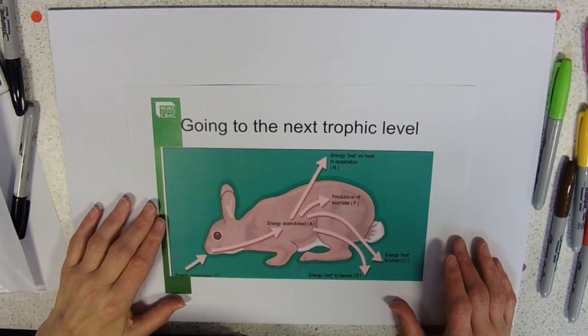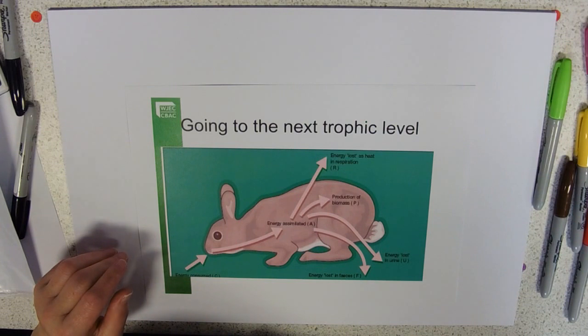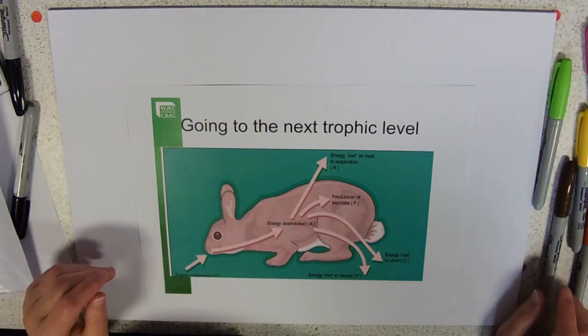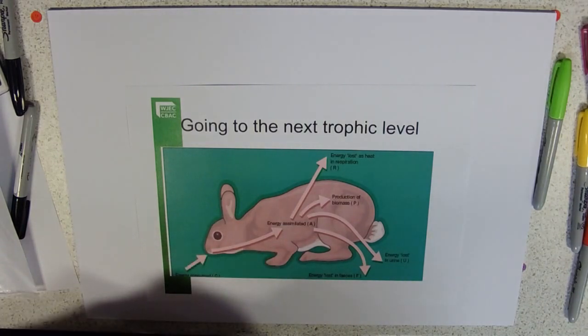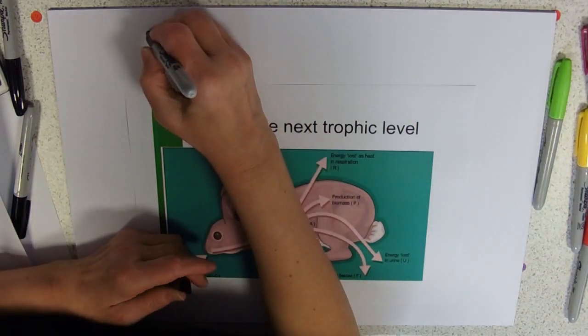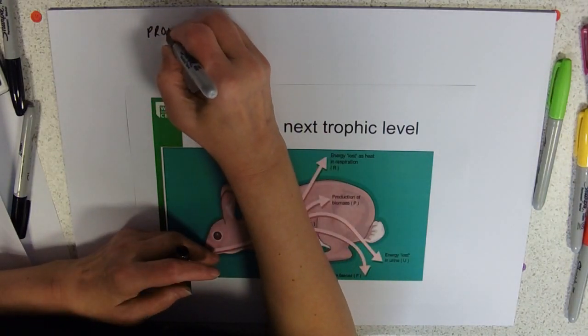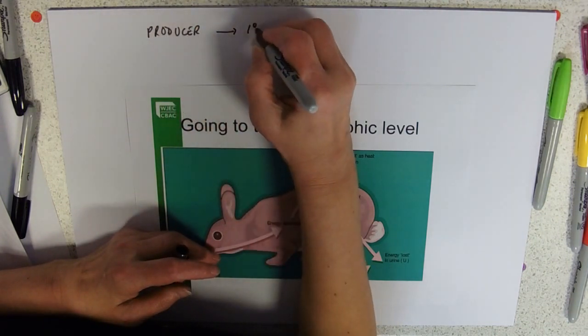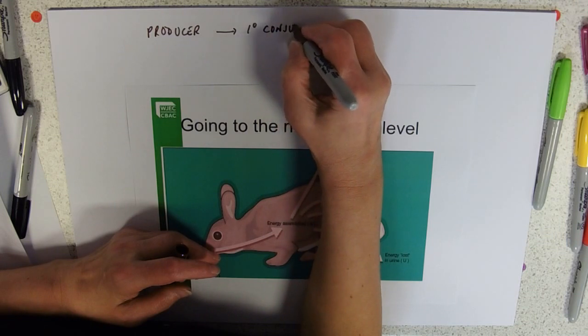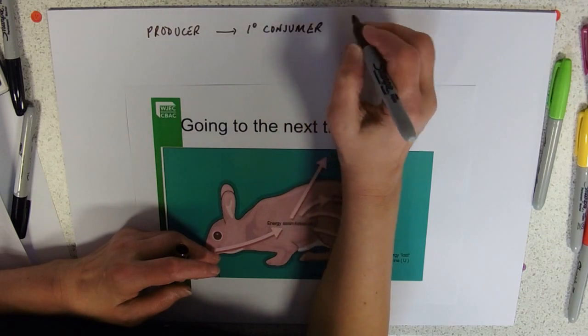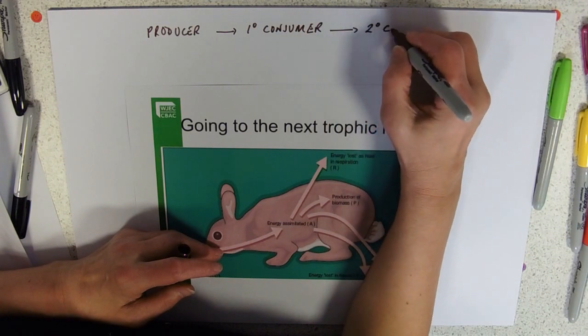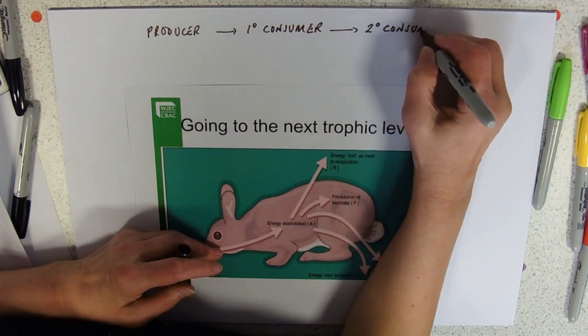I just lifted a nice picture of a bunny consuming things and this is going up those trophic levels. We're going from here, a producer, to a primary consumer, and the principles of this would apply also to the transfer from primary to secondary consumer.